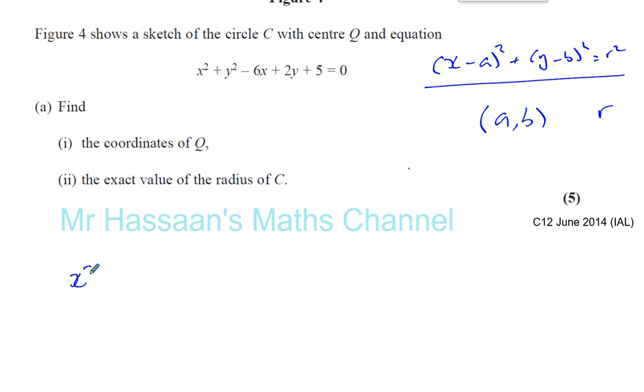So I'm going to write X squared. Now I'm going to write the X's together, so you've got minus 6X. Then you've got plus Y squared and plus 2Y. Then I'm going to take the constant here, which is just the 5, and I'm going to subtract it from both sides.